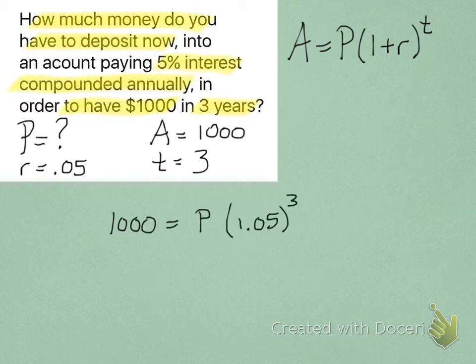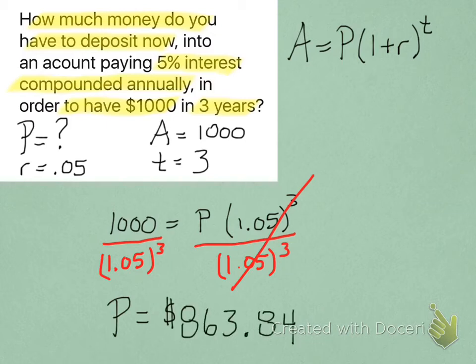So, if you plug all of these numbers in for the corresponding letters, P is the only variable left, and that's what we're going to be looking for. Now, we've got 1,000 equals P times 1.05 cubed. So, P times that number, just divide that number out. Type that into your calculator, and you get P is $863.84.